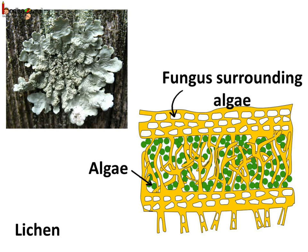Sometimes two different kinds of plants live together and help each other in nutrition and other processes. Like in the case of lichen, it is an association of fungus and green algae. The green algae makes the food and gives it to the fungus. The fungus, on the other hand, provides water and minerals. So this association is beneficial to both the fungus and the algae.